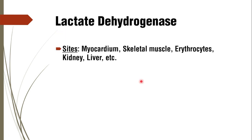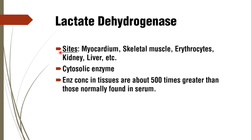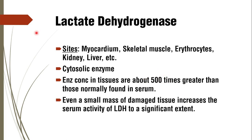The major tissues rich in lactate dehydrogenase include myocardium, skeletal muscle, erythrocytes, kidney, and liver. Virtually all major organs have high concentrations of lactate dehydrogenase. It is a cytosolic enzyme, and tissue concentrations are about 500 times greater than those normally found in serum. Therefore, even a small mass of damaged tissue can significantly increase serum LDH activity.